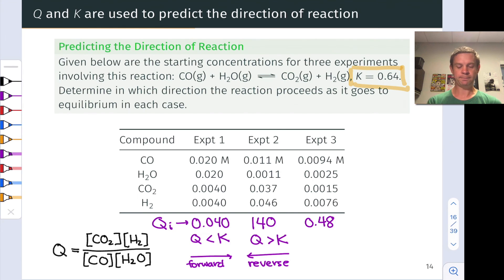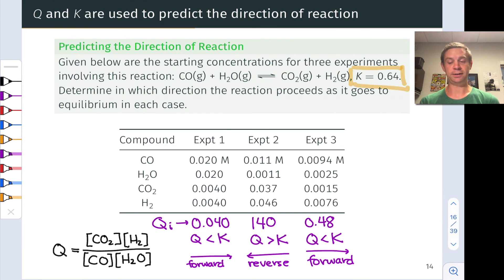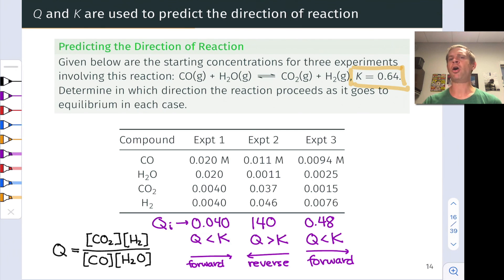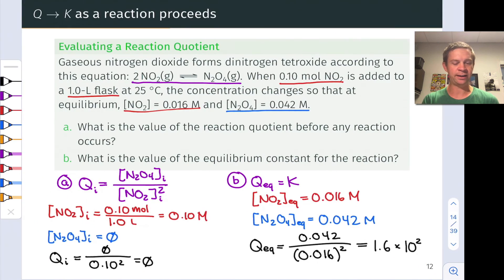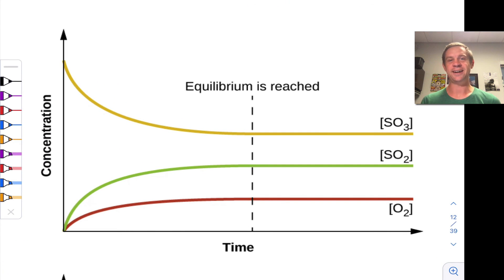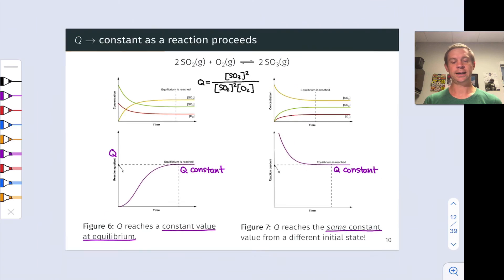In experiment 3, the initial Q value is 0.48, slightly less than the equilibrium value of 0.64, so Q is less than K and the reaction goes forward. As we see, it's all about comparing Q to K to assess the spontaneous direction. And if an initial Q value is already equal to K, the system won't move at all — it's already at chemical equilibrium and will remain there, with no net reaction forward or backward.